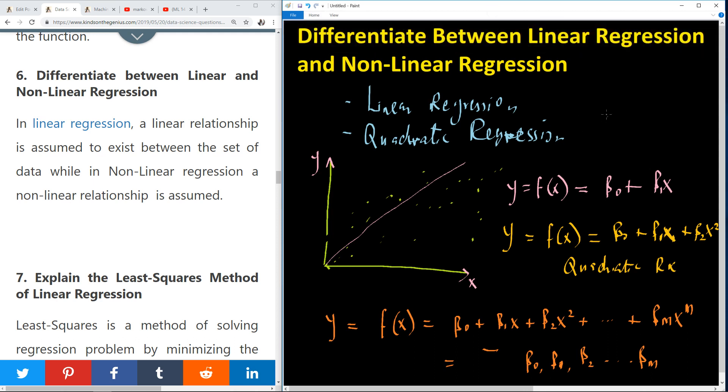So if m is equal to 1, then we have linear. If m is equal to 2, we have quadratic. If m is equal to n, then we have nth order.